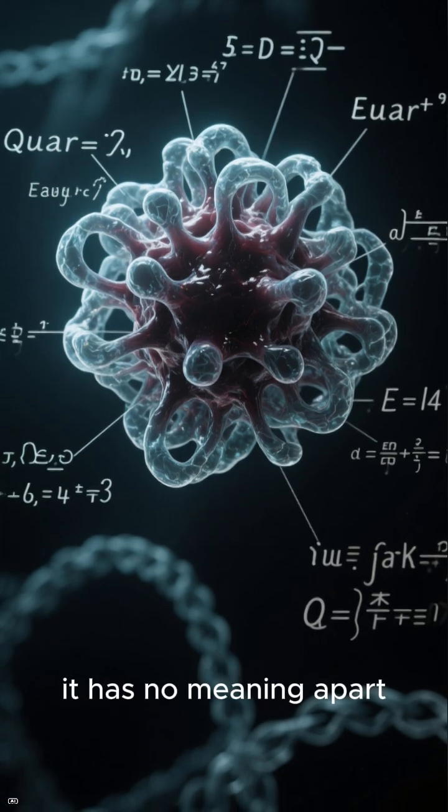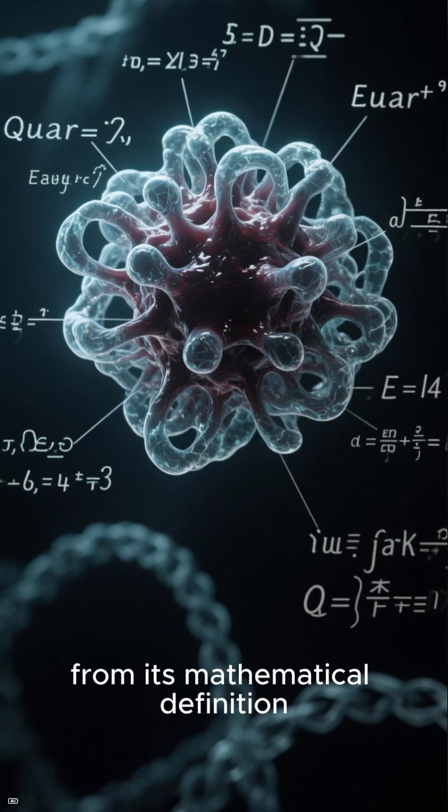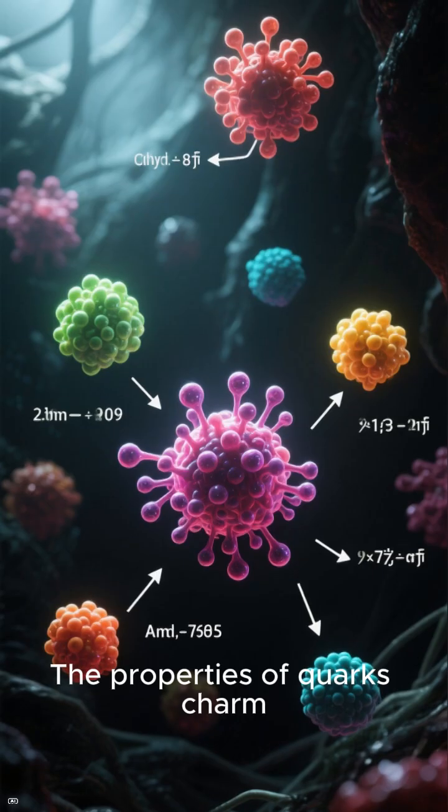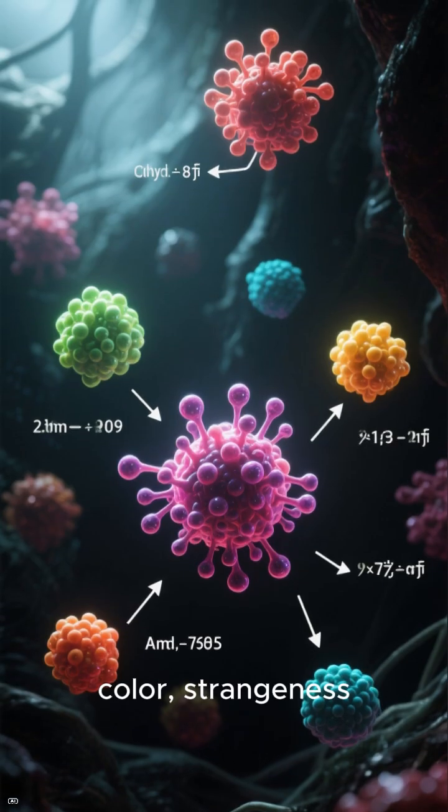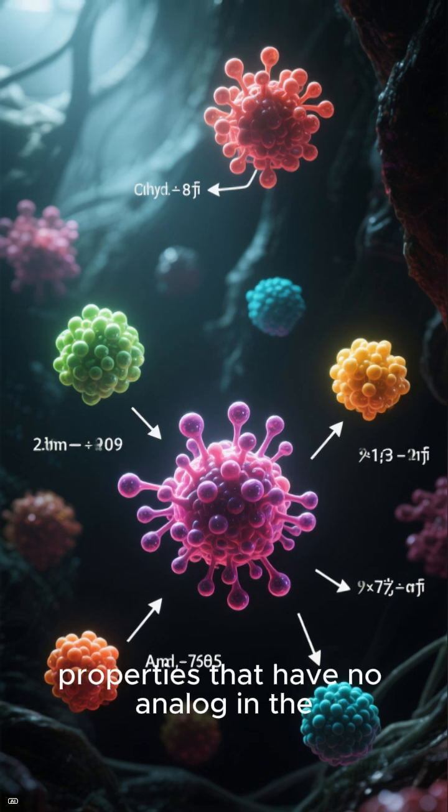John Horan said a quark is a purely mathematical construct. It has no meaning apart from its mathematical definition. The properties of quarks—charm, color, strangeness—are mathematical properties that have no analog in the macroscopic world we inhabit.